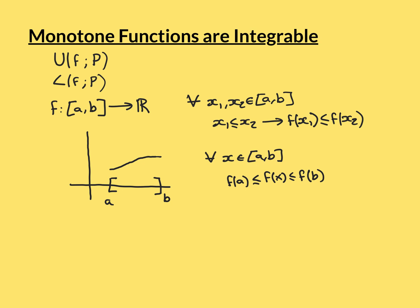So you might worry when you initially see this theorem — that monotonically increasing functions are always Riemann integrable — and think: surely I could create a monotonically increasing function that is unbounded, and therefore that wouldn't be Riemann integrable. But you can't.